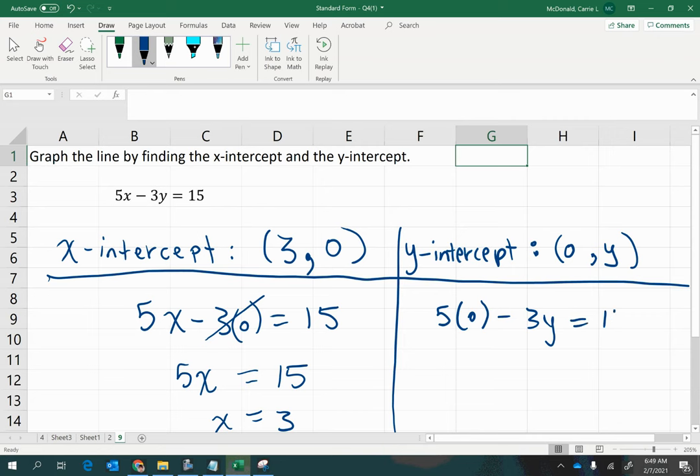So just writing it out. Then I'm going to simplify. This cancels to 0. Then I have negative 3y equals 15, which I need to solve for y. So I'm going to divide both sides by negative 3 to get y equals negative 5. So now I can write that in as my y-coordinate.